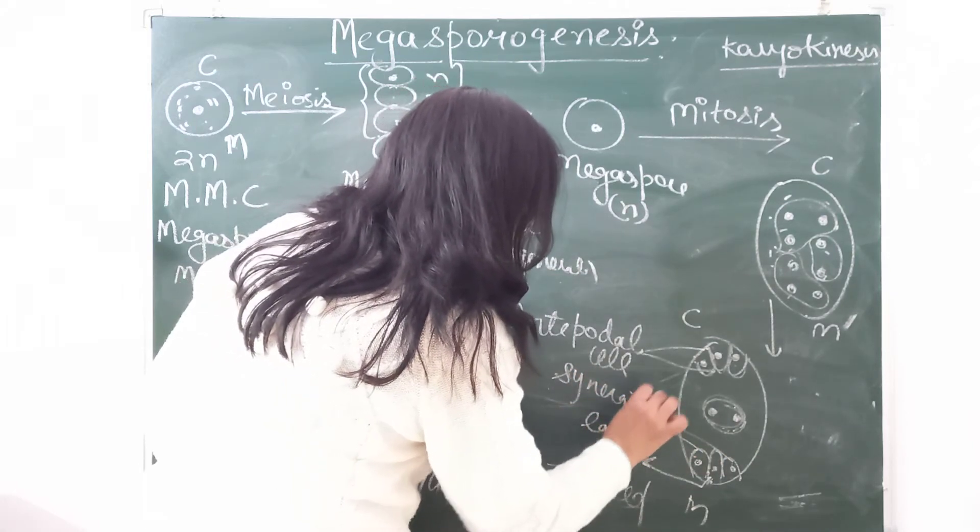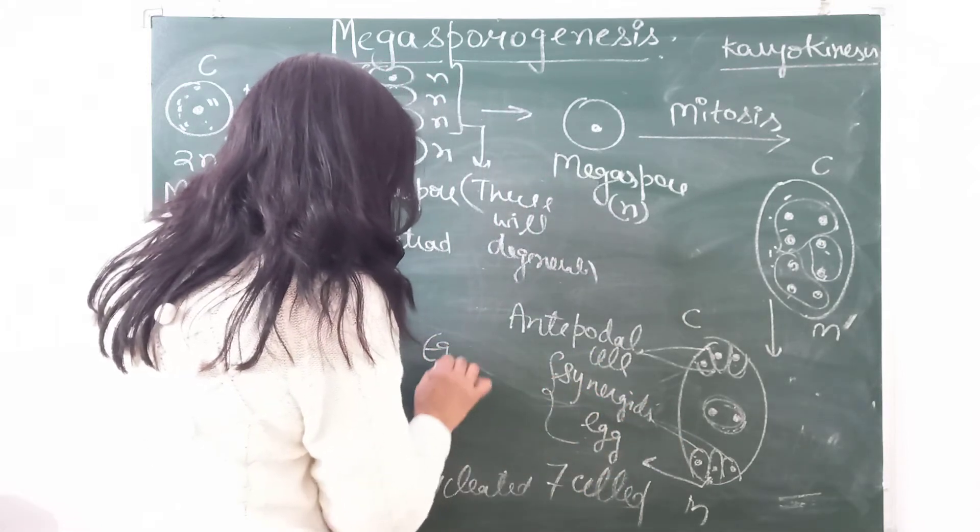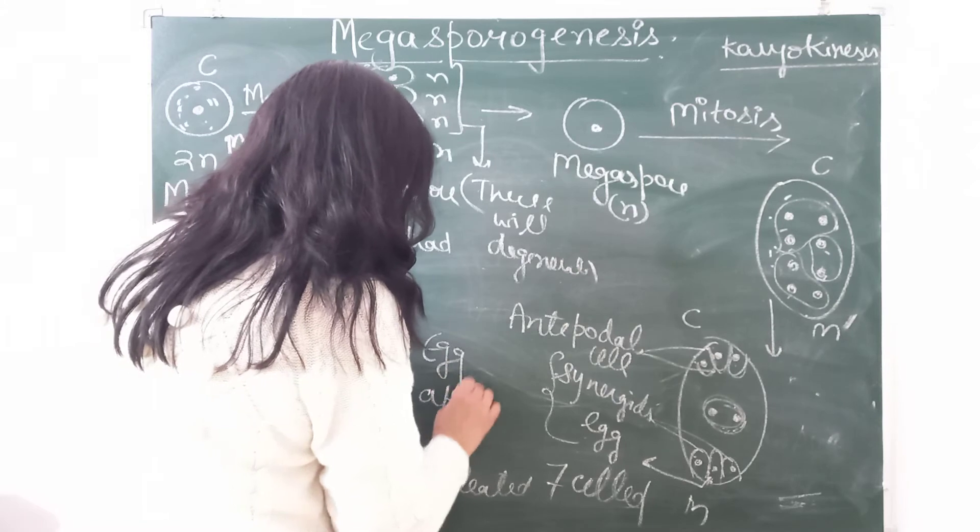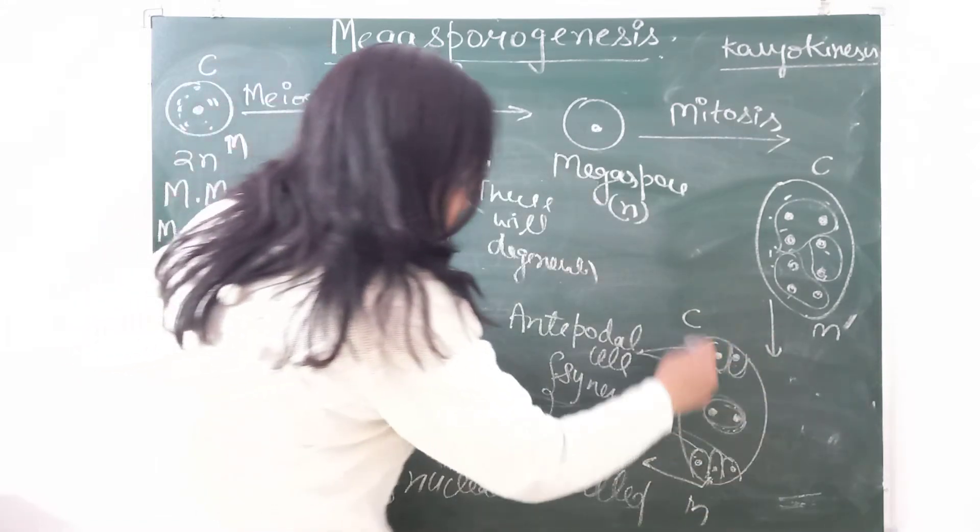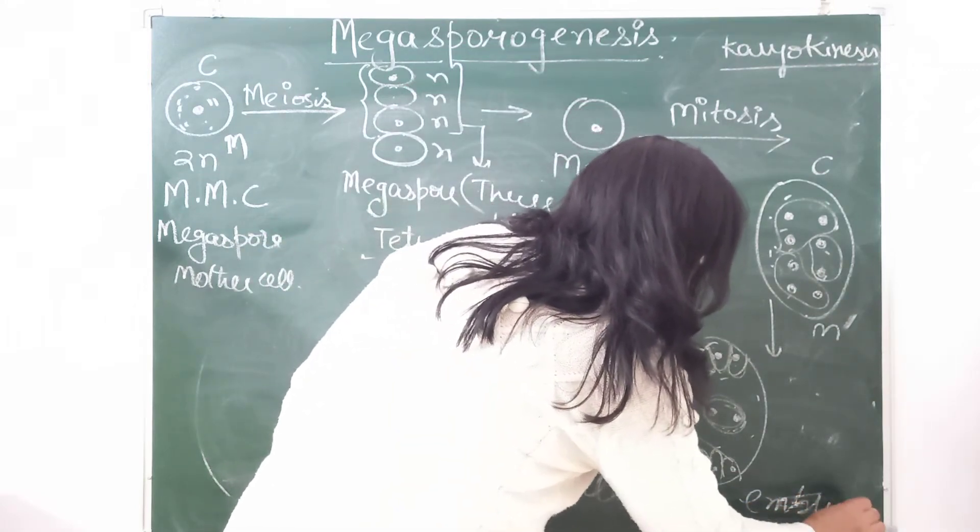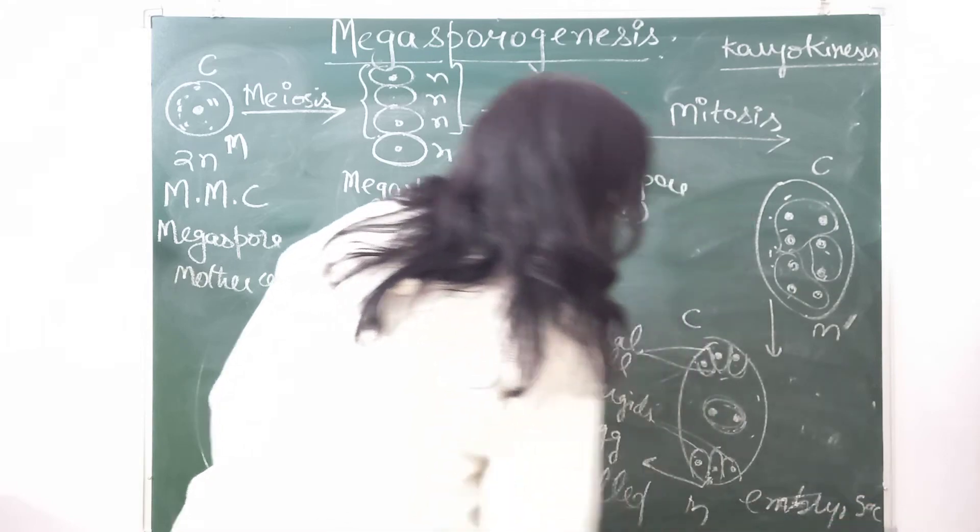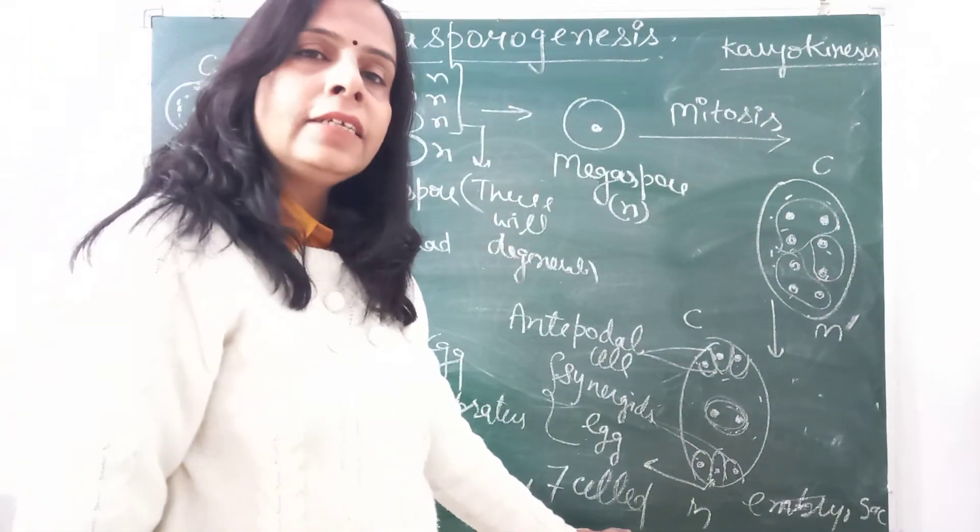Together, synergids and egg is known as egg apparatus. And this complete structure is known as embryo sac. Now, this embryo sac is eight nucleated, seven cell structure.